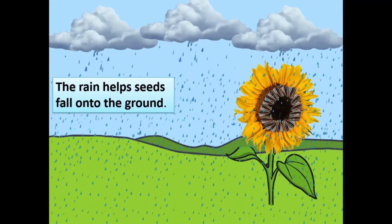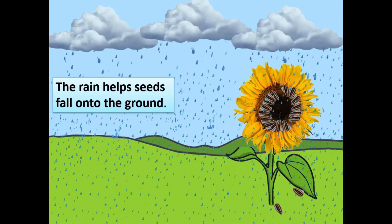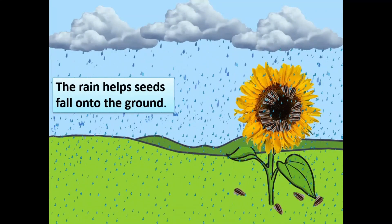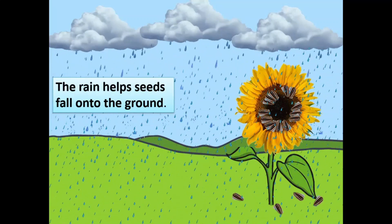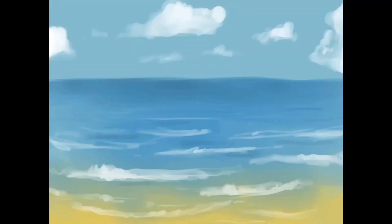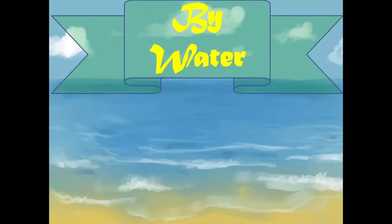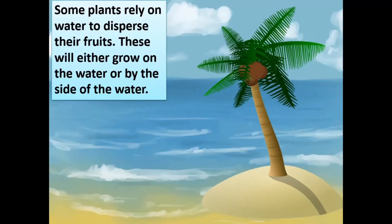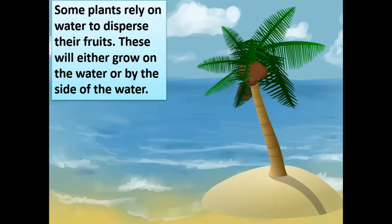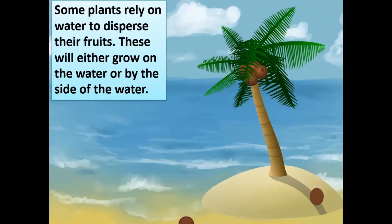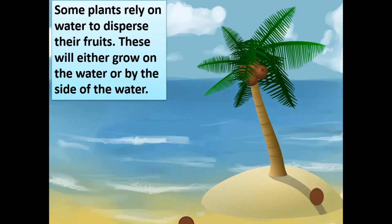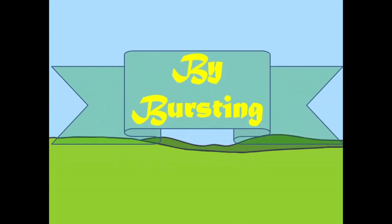The rain helps the seeds fall onto the ground. Some plants rely on the water to disperse their fruits. These will either grow on the water or by the side of water.